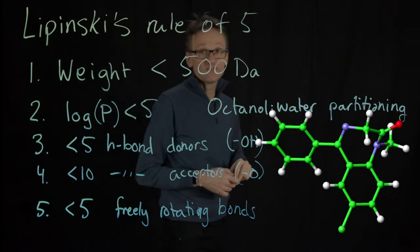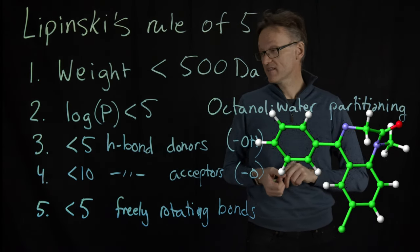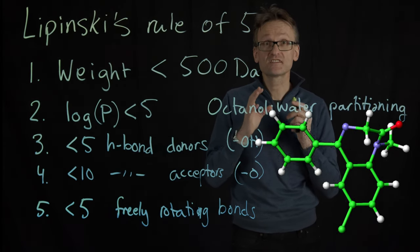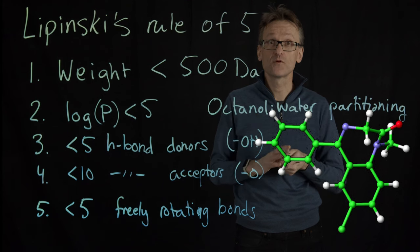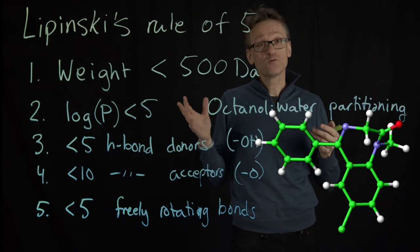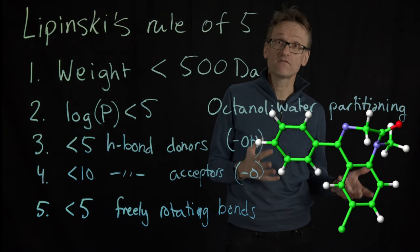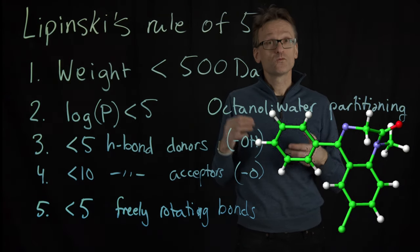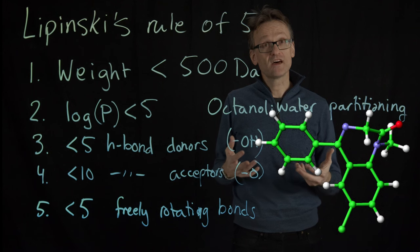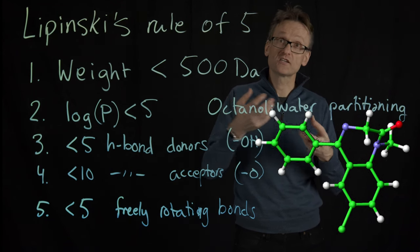So why is it so bad to have freely rotating bonds? Well, that has to do with the free energy in exactly the same way that you learned from protein folding. So if you were to have two molecules, one that is very floppy and flexible, let's say with 10 freely rotating bonds here. What's going to happen to the entropy of that molecule once you force it to actually go into a binding site?